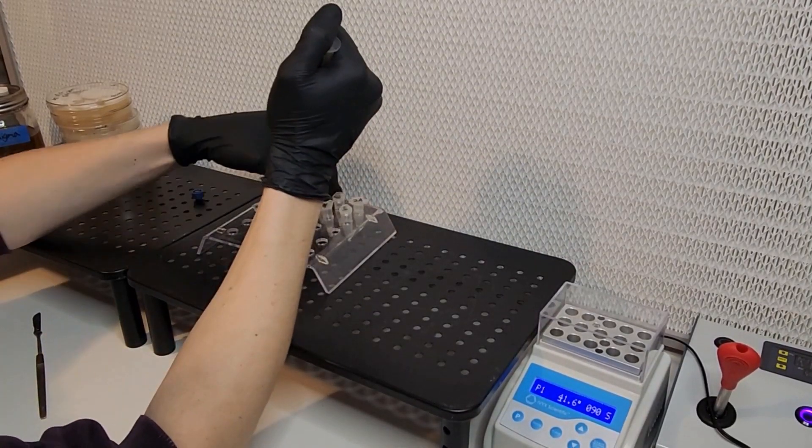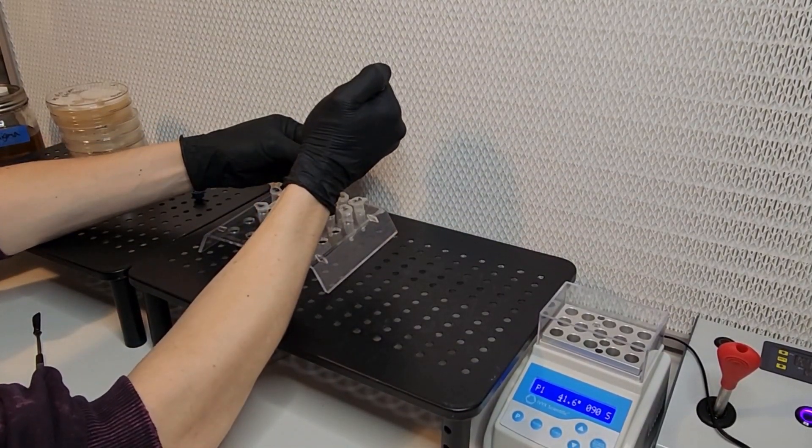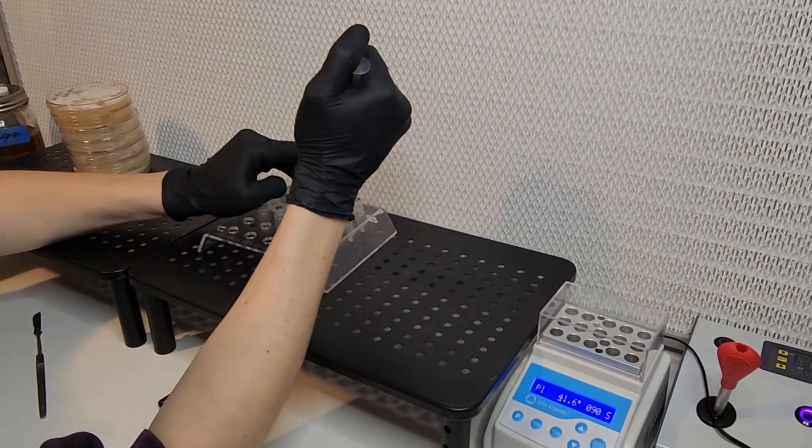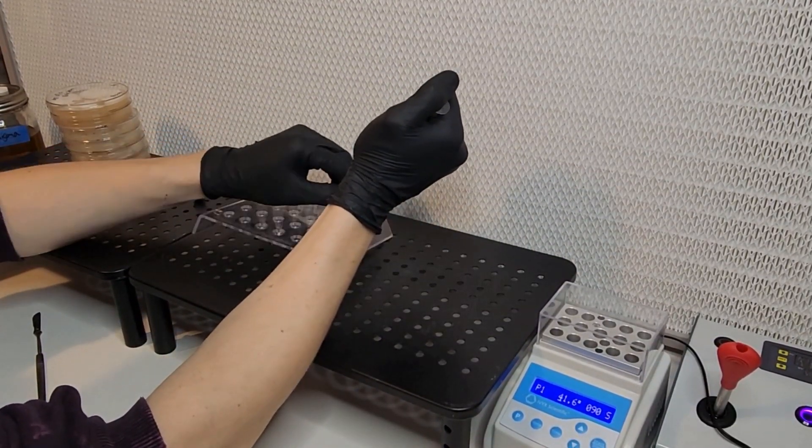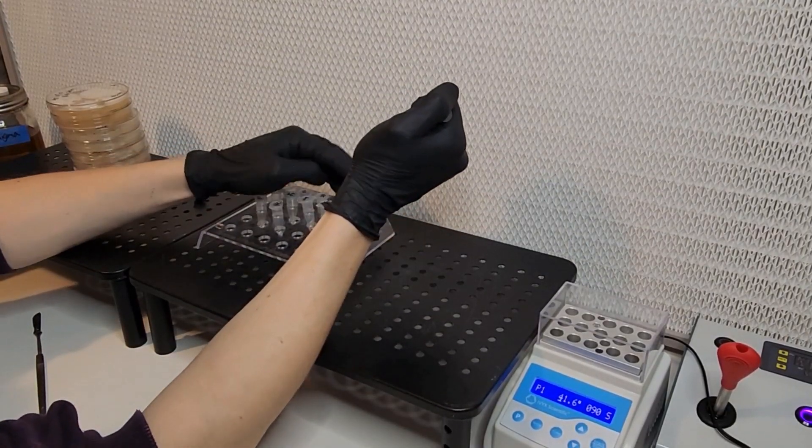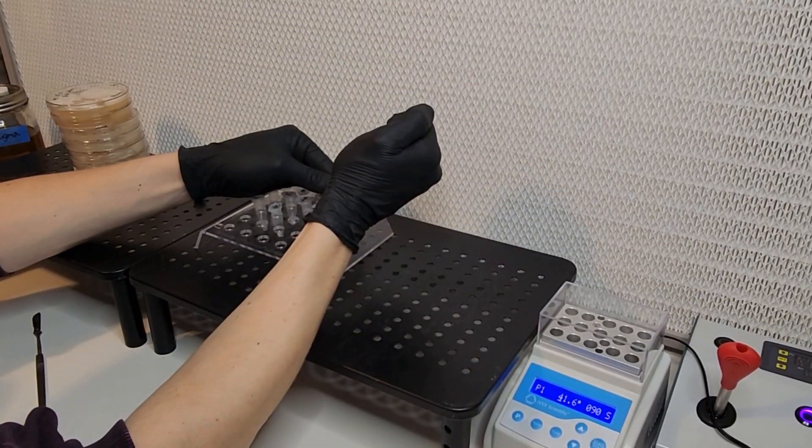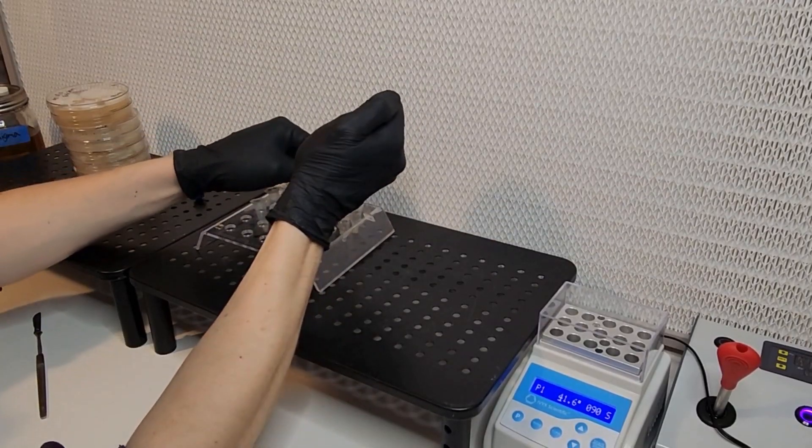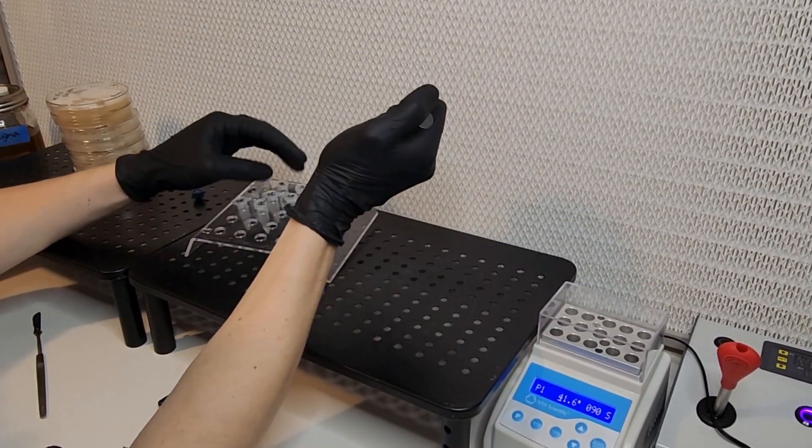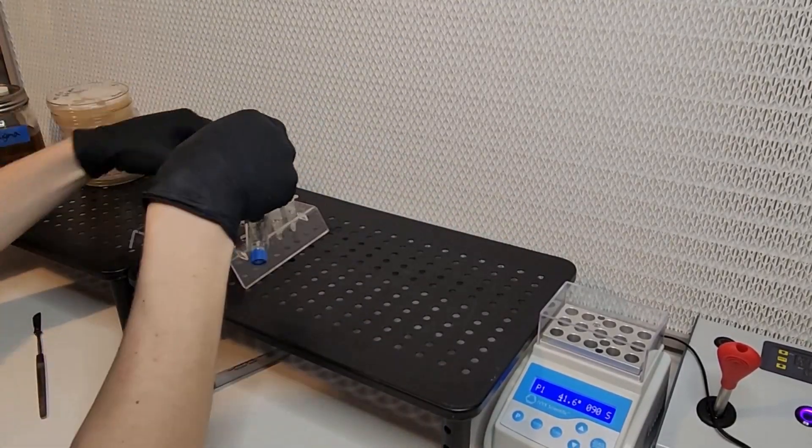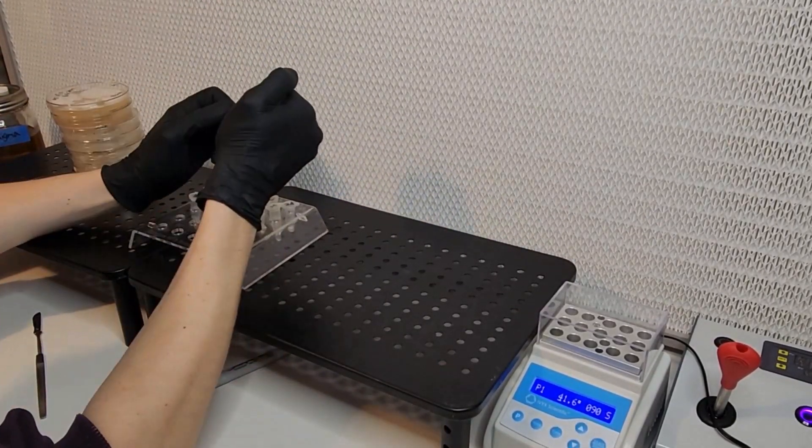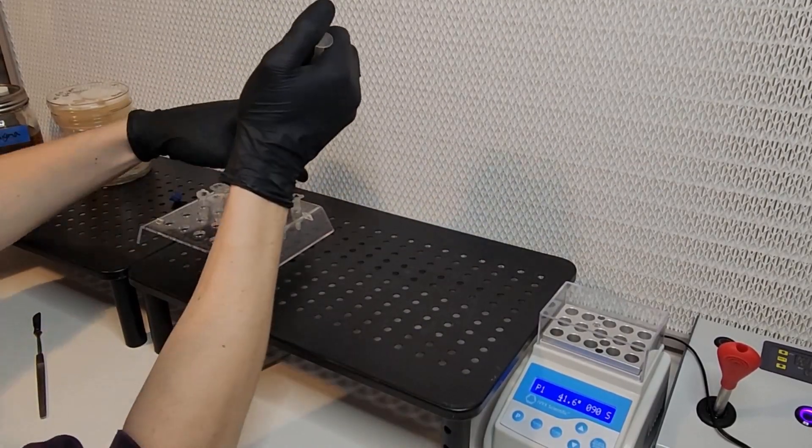I actually prefer doing this after using the pestle on each tube, but I just sort of forgot and did this one first. It doesn't really matter. But using the pestle before adding in your liquids will help you not spill any liquids anywhere.